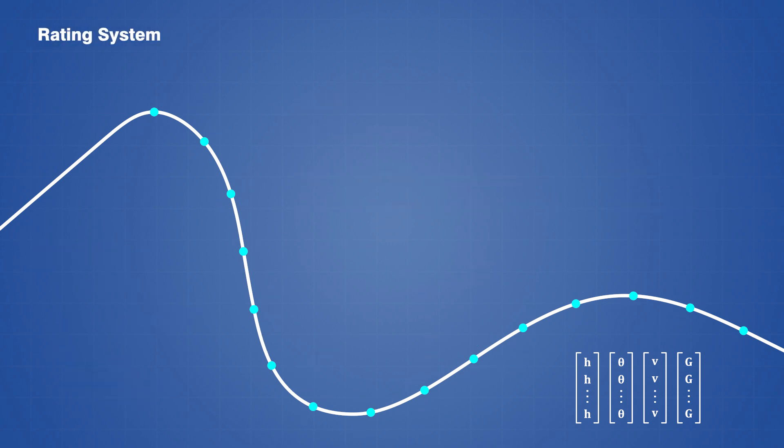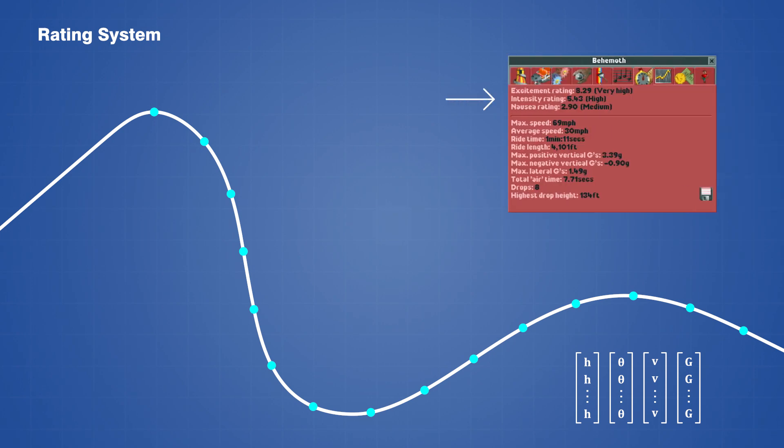This part of the program is responsible for giving each track design a numerical score, similar to the rating system in the rollercoaster tycoon computer game, and it's one of the most challenging components to get right in order for the machine learning process to work properly. Like I mentioned at the beginning of the video, there is no single equation that can define how fun a rollercoaster is, and there are countless ways that you could go about evaluating a rollercoaster since it tends to be very subjective.